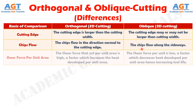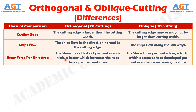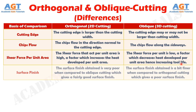If we differentiate them in terms of shear force per unit area: in orthogonal cutting, the shear force that acts per unit area is high, a factor which increases the heat developed per unit area. Whereas in oblique cutting, the shear force per unit area is low, a factor which decreases heat developed per unit area, hence increasing tool life. If we differentiate them in terms of surface finish: the surface finish obtained in orthogonal cutting is very poor when compared to oblique cutting, which gives a fairly good surface finish. Whereas the surface finish obtained in oblique cutting is finer when compared to orthogonal cutting.